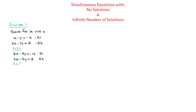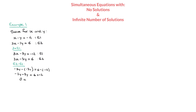Doing e2 minus e1: on the left-hand side we have 3x minus 3x, which is 0, and negative 3y minus negative 3y. That simplifies to negative 3y plus 3y, which is 0. On the right-hand side, 6 minus negative 12 becomes 6 plus 12, which is 18. So we're left with 0 equals 18.